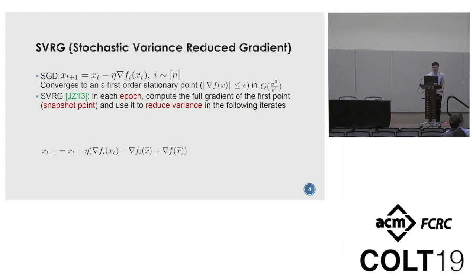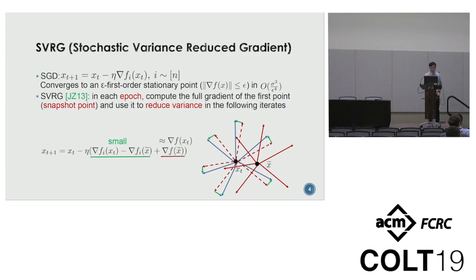SVRG was introduced to reduce the variance in SGD. The idea is that in each epoch, we compute the full gradient of the first point and use it to reduce the variance in the following iterations. The first point of each epoch is called a snapshot point. This is the recursion of SVRG: instead of using the stochastic gradient, we use the stochastic gradient at x_t minus the stochastic gradient at x̃ plus the full gradient at x̃. Here, x_t is the current point and x̃ is the snapshot point. Suppose x̃ is a snapshot point and the red arrows are the stochastic gradients. The green arrows are the difference between two stochastic gradients. You can see if the function is smooth, then the difference between two stochastic gradients will be small if x_t is close to x̃. For the same reason, the full gradient at x̃ will also be close to the full gradient at x_t. Basically, the variance can be bounded if x_t is close to x̃.